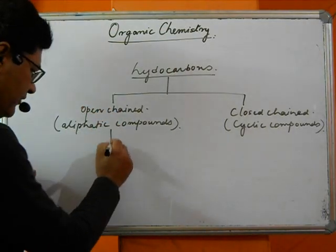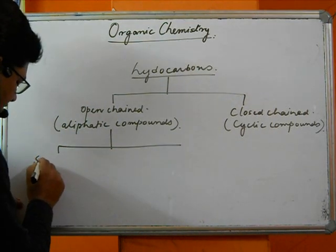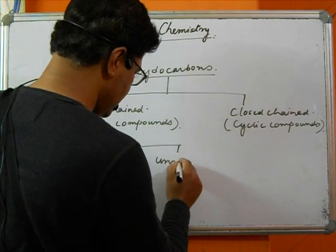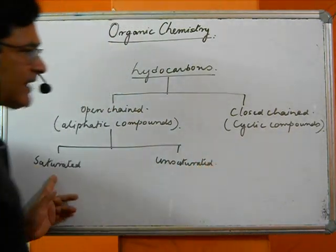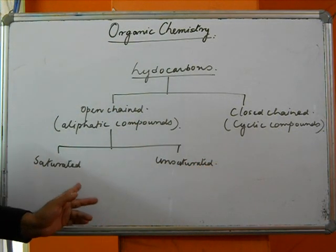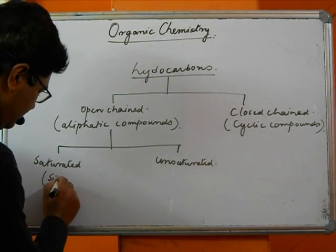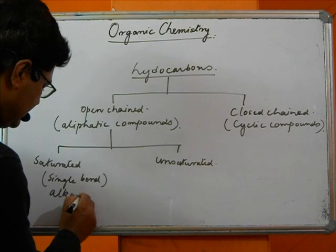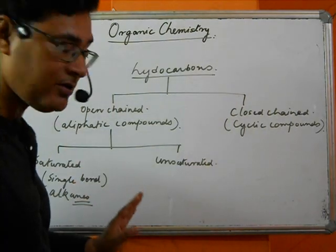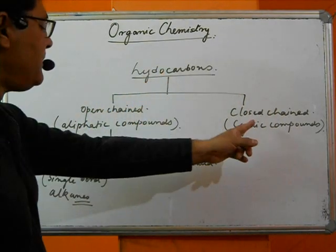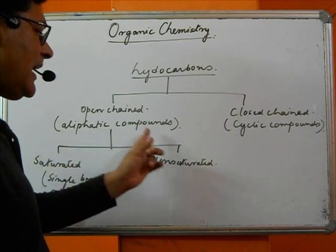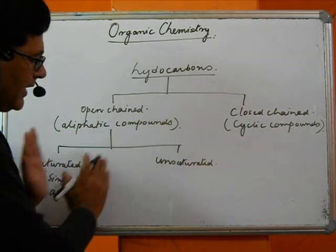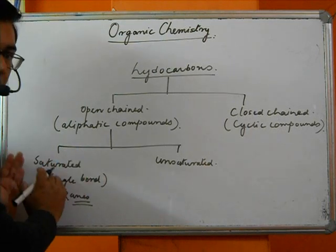The aliphatic compounds are further divided into two types: saturated compounds and unsaturated compounds. Saturated compounds are those with single bonds only. Unsaturated compounds are those with double bonds or triple bonds.